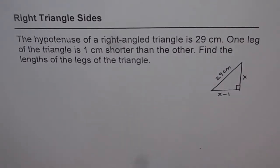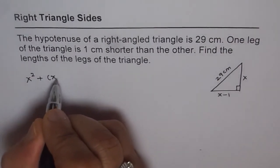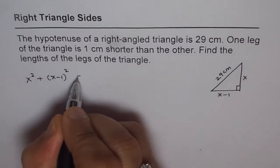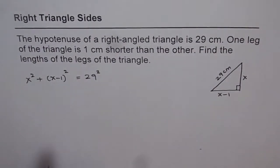Now we can apply Pythagorean theorem. And then we get our equation. So the equation is x squared plus x minus 1 whole square equals to 29 squared. Now this equation is in single variable, x.